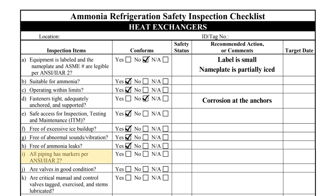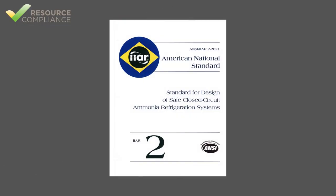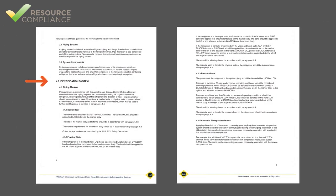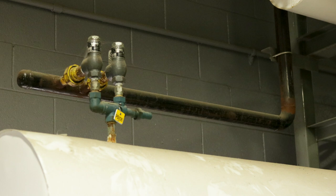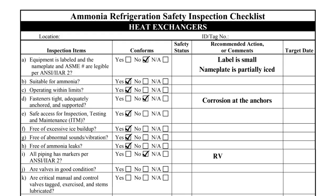Item I inquires if the pipes are marked as required by IIAR Standard 2. Standard 2 requires piping mains, headers, and branches to be labeled with the following: the word ammonia printed in black letters; the physical state abbreviation, LIQ or VAP; the relative pressure, high or low; an arrow depicting the direction of flow in the pipe; and a service abbreviation indicating the purpose of the pipe. Since the relief valve discharge pipe is not labeled, it does not conform and must be listed as a deficiency.